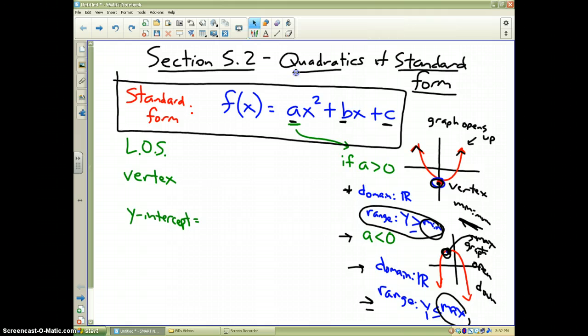So that's what a does. Graph either opens up and it's got a minimum value. If a is greater than 0 the graph has a minimum and if a is less than 0 the graph or the function has a maximum. Alright. Now let's go on. B and C.